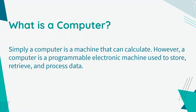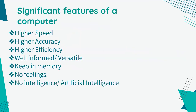Basically, a computer is an electronic device that can manipulate information or data. It has the ability to store, retrieve, and process data. You may already know that you can use computers to type documents, send emails, play games, and browse the internet. Next, I'm going to talk about some significant features of a computer.